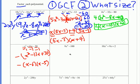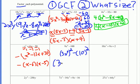For this next problem, there is no GCF. It's a binomial, so I think: is it a difference of squares? It is a difference, and 9 and 100 are both perfect squares. If the exponent is even, it's a perfect square. This is really 3x² squared minus 10 squared, so it factors into (3x² + 10)(3x² − 10). I should check if either of those are again a difference of squares — the first is a sum so it won't factor, and the second is a difference but 10 and 3 aren't perfect squares, so we're done.